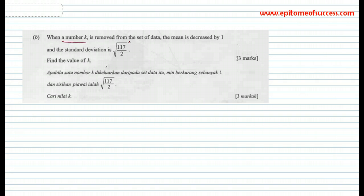The first thing is this: you have to understand it. A number K is removed from the set of data. That data has got 9 numbers. When a number is removed, that leaves 8. And the mean is decreased and the standard deviation would have changed. Here you would have to form an equation based on the standard deviation, the new standard deviation.